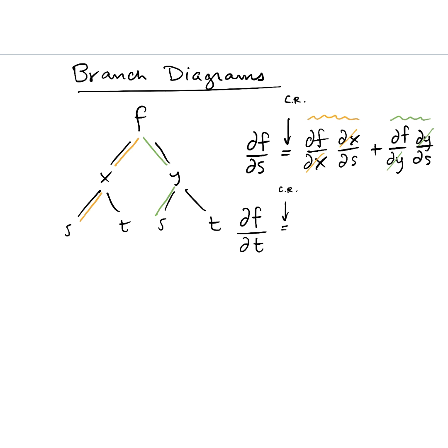Hopefully what you did was you used your eyes first and you went and looked to see the different ways that t could propagate to affect f. So there's this purple branch and there's also this blue branch. Those are the two ways that a change in t could result in a change in f. The rate of change by chain rule is therefore df/dx times dx/dt plus df/dy times dy/dt. That's how these branch diagrams work to help you.